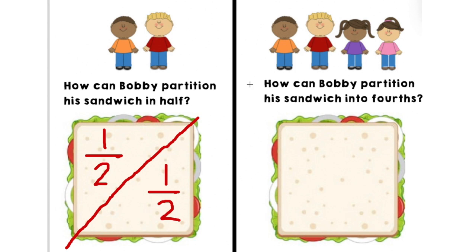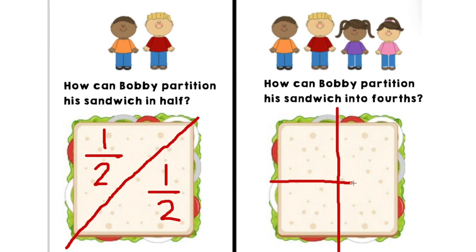Can you think of a way that Bobby could partition his sandwich into fourths? Let's try partitioning it first going a vertical line, so that means up and down. Okay, I only see two equal parts — I know two equal parts is a half, but I want four equal parts. What can I do now? Did you say cut it sideways? Yes, that's horizontally. I can cut it horizontally one more time and that should make four equal parts. Let me start in the middle. Let's count those pieces — one, two, three, four — and they're equal parts.